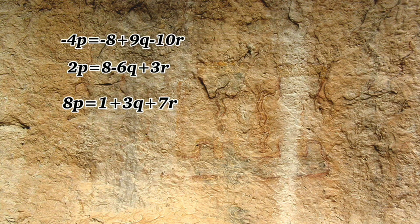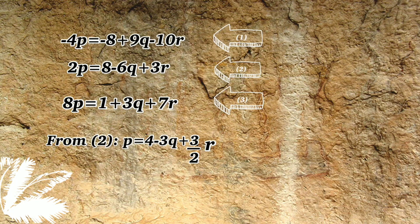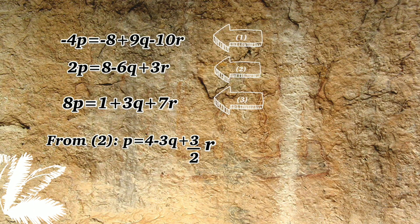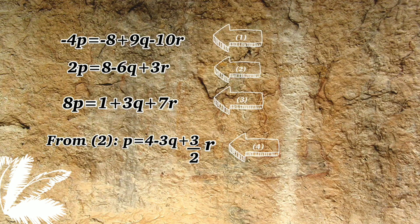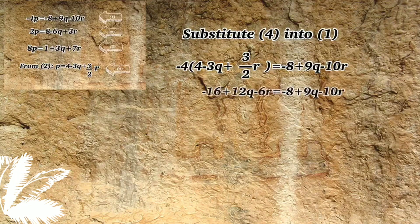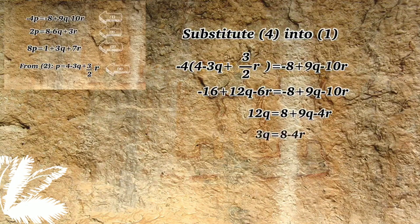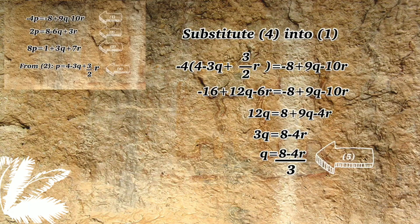From the question given, label each equation as equation 1, 2, and 3. From equation 2, we can get b equals to 4 minus 3q plus 3 over 2r, and label it as equation 4. And then, substitute equation 4 into equation 1, and we will get q equals to 8 minus 4r over 3, and label it as equation 5.